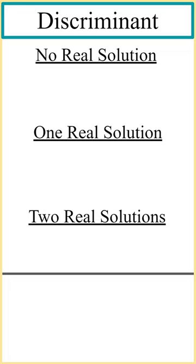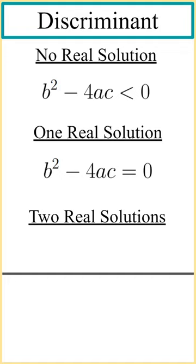For no real solution, it tells us that b squared minus 4ac is less than zero. For one real solution, it tells us that b squared minus 4ac is equal to zero. And for two real solutions, it tells us that b squared minus 4ac is greater than zero.